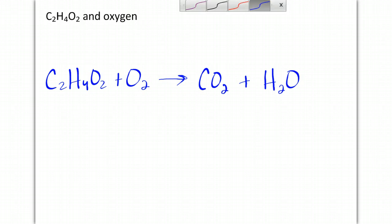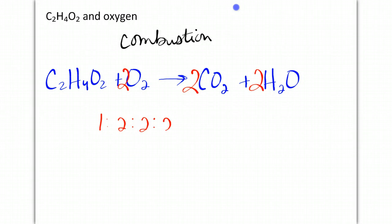The next example, C2H4O2 plus oxygen yields, and this is a combustion reaction, which always yield the same two products, CO2 and H2O. So to balance the equation, we should end up with a coefficient of 2, 2, and 2. So it has a 1 to 2 to 2 to 2 ratio.